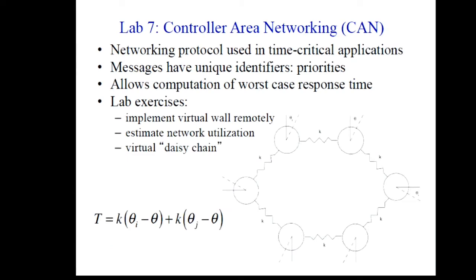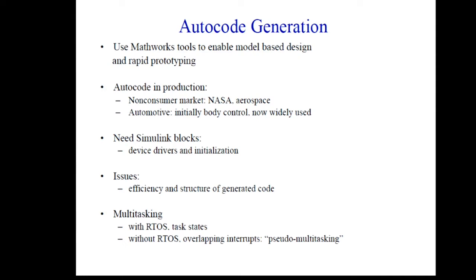We do a CAN networking exercise covering CAN bus utilization and estimating the effects of delay. Then we introduce autocode generation using MathWorks tools to enable rapid prototyping. Twenty years ago there wasn't much autocode in production in the automotive industry — it was mostly in aerospace. Now it's widely used even for powertrain and safety control systems. There's still a lot of C code, but autocode coverage has improved substantially, largely because the tools have generated much more efficient and well-structured code, partly due to the automotive advisory board.